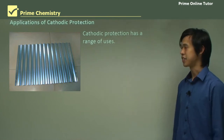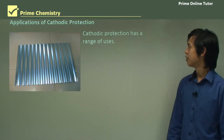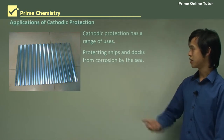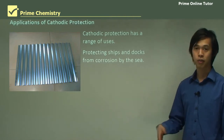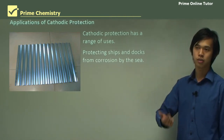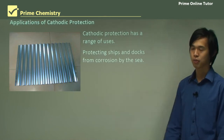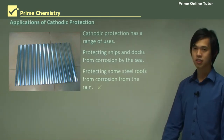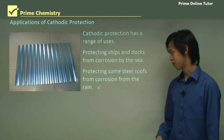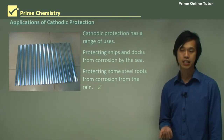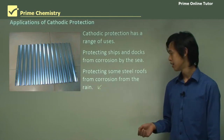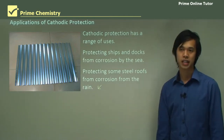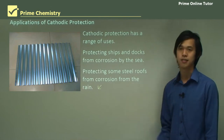What are the applications of cathodic protection? Cathodic protection has a number of uses. We can protect ships and docks from corrosion by the sea — anything submerged in water can be protected. We also use it to protect steel roofs from corrosion from rain, because rain is a little bit acidic and we don't want our steel roofs corroding just because it's raining.